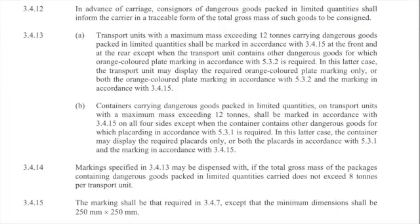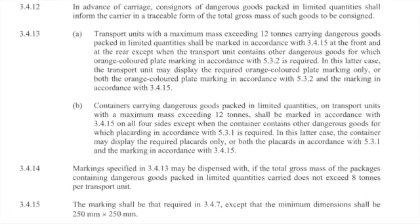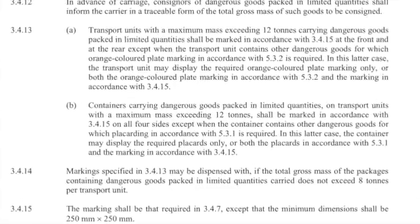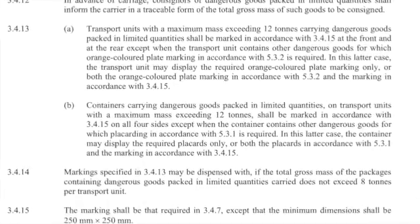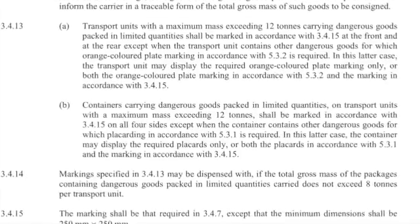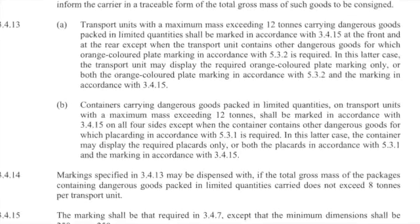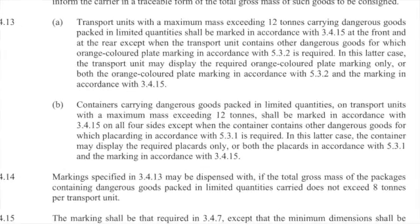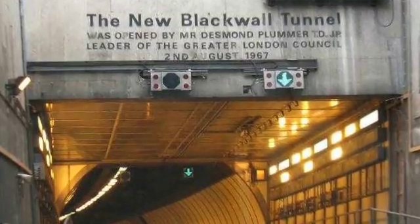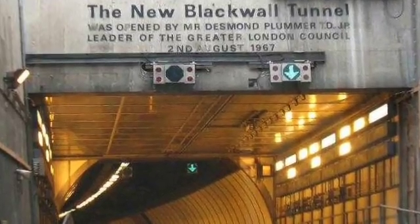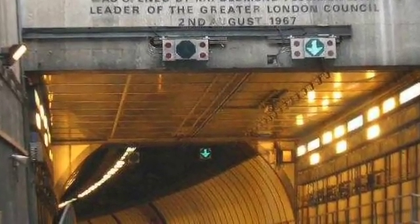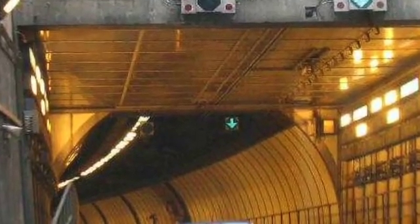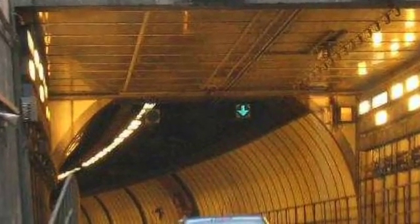For transport via road under ADR, the only vehicle marking required is a placard of the limited quantity symbol on the front and rear of the vehicle, or on all sides of a container if greater than eight tonnes are carried. At such volumes the vehicle is also assigned to tunnel category E, which would rule out travel through many of the London tunnels such as the Blackwall Tunnel.